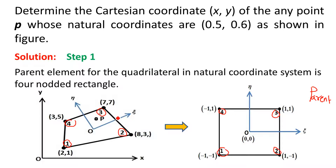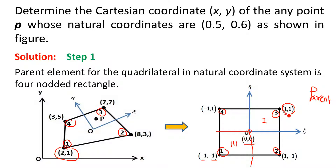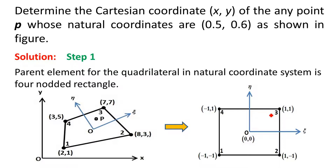In the natural coordinate system, the origin is always assumed at the center, so coordinates of origin are (0, 0). The maximum ordinate is +1 and minimum is -1, irrespective of any Cartesian coordinate. Node 1 is in the third quadrant: (-1, -1). Node 2 is in the fourth quadrant: (+1, -1). Node 3 is in the first quadrant: (+1, +1). Node 4 is in the second quadrant: (-1, +1). So write down the coordinates of all 4 nodes of the rectangular element in the natural coordinate system.